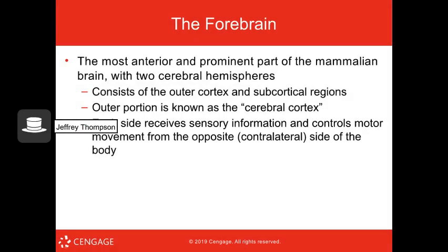The forebrain is what most people think of when they think of the brain — the most prominent part. It consists of the outer cortices and the subcortical regions below them. The cerebral cortex receives sensory information and controls motor movement from the contralateral side. Information switches from left to right and right to left via the pons — it all comes together.